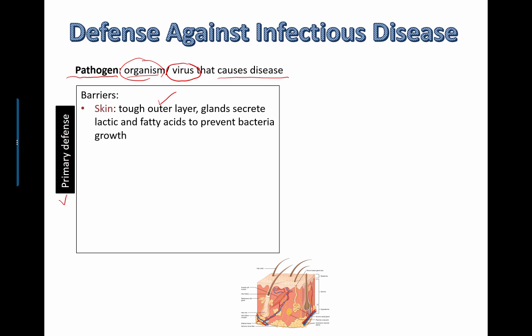There are some glands that secrete lactic acid that lower the pH and therefore try to prevent bacterial growth, as well as fatty acids, also trying to lower the pH. The average skin pH is something like pH 5. And actually a lot of the hand creams or face creams that you buy — and I use a lot of face creams to keep my complexion young and beautiful — those face creams are pH balanced to match the pH of our skin.